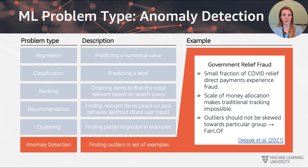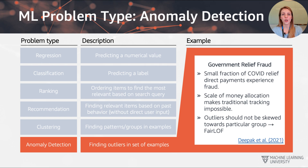The final example is anomaly detection, which is about finding outliers or data points that look very different from the rest of the data. The example here is fraud — a population where the majority behaves as expected and a very small fraction engages in fraudulent behaviour. The fraudulent behaviour observed here is related to payments made from a government relief fund, where the scale of money allocation makes traditional tracking almost impossible, so a machine learning solution is used to identify fraudulent transactions or requests.